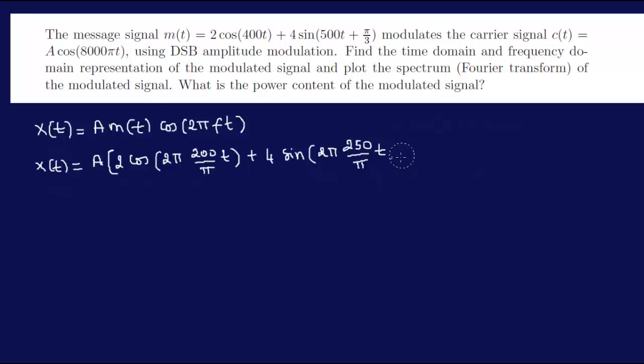That whole thing underneath the bracket is basically M(t). Now we can go ahead and multiply by cos(2πFt).